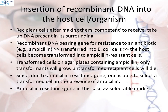Insertion of recombinant DNA into the host cell or organism: there are several methods of introducing the ligated DNA into recipient cells. Recipient cells, after being made competent to receive, take up DNA present in their surroundings. If a recombinant DNA bearing a gene of interest conferring resistance to an antibiotic — for example, ampicillin — is transferred to E. coli cells, the host cell becomes transformed into an ampicillin-resistant cell. If we spread the transformed cells on an agar plate containing ampicillin, only the transformants will grow; untransformed recipient cells will die. The ampicillin-resistance gene in this case is called a selectable marker.